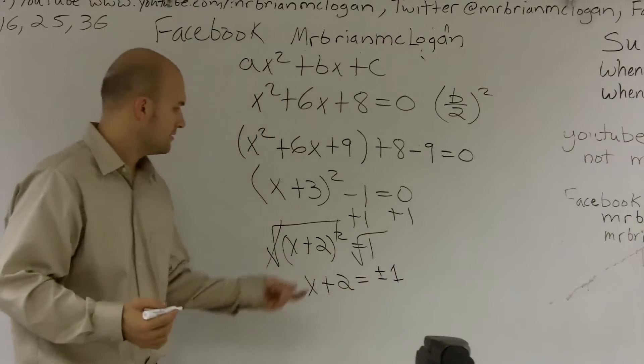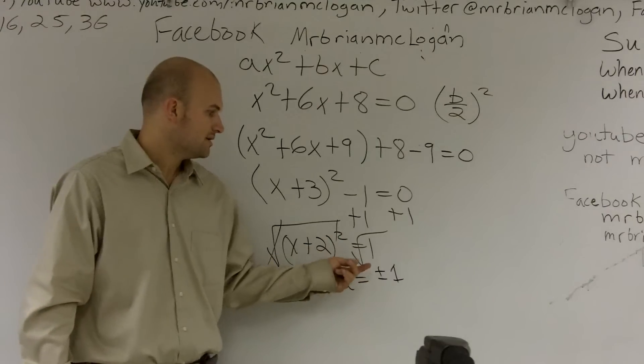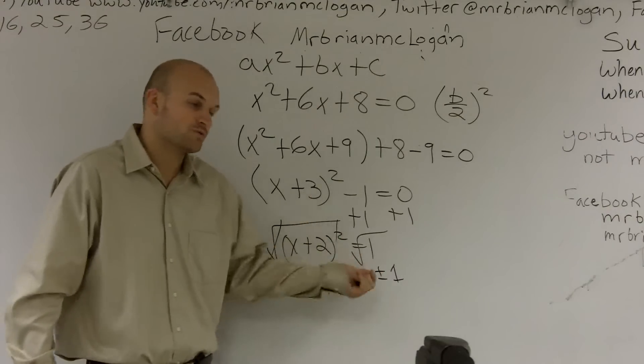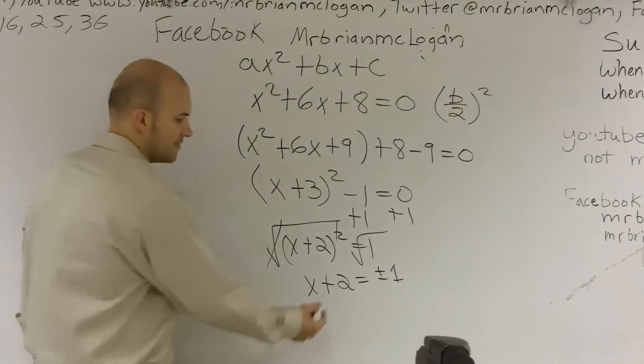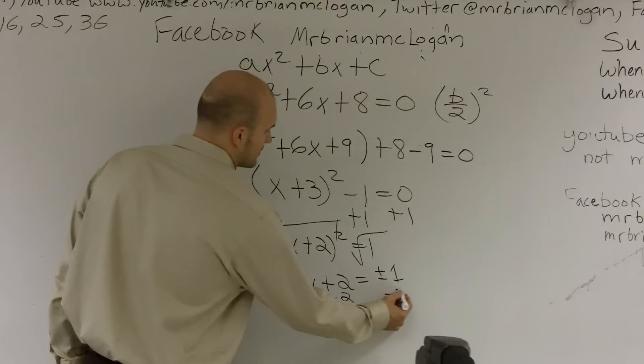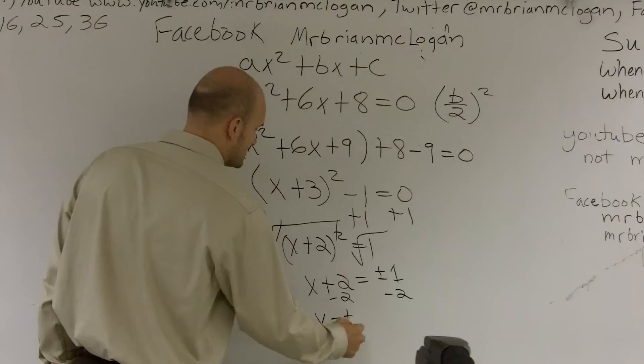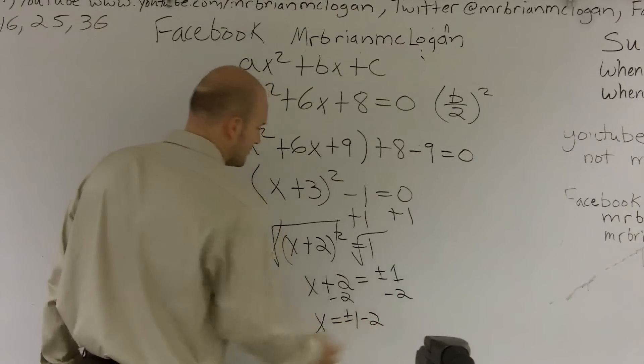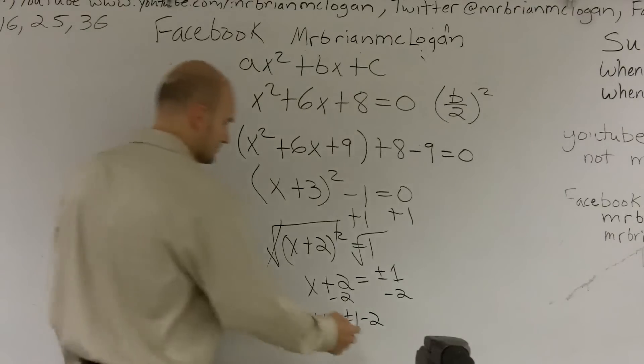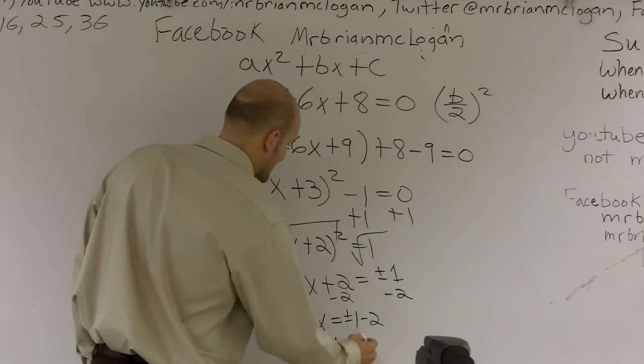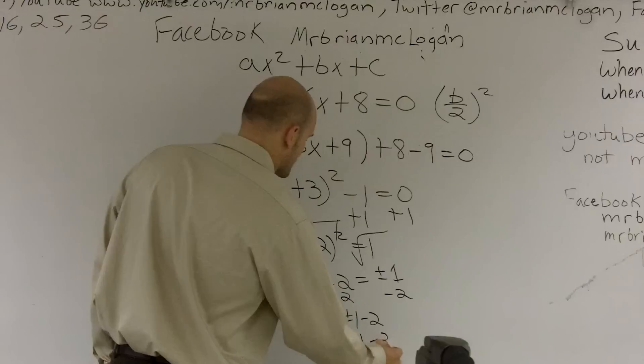The square root of 1 is 1. But we don't know if it's negative 1 times negative 1 gave us 1 or if it was 1 times 1 gave us 1. So we have to take the plus or minus. Then I just get rid of my 3 and I'm left with x is equal to plus or minus 1 minus 3. Or, really, you could say x is equal to negative 1 or negative 3.